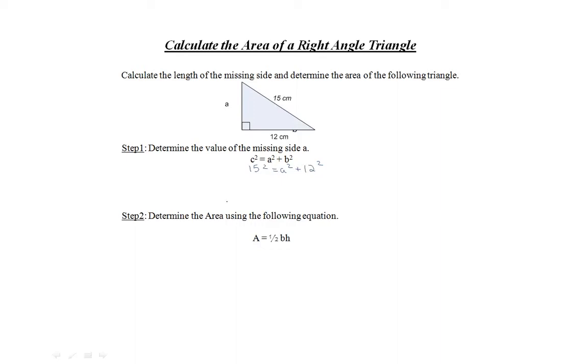Rearrange the equation to solve for A. Move the 12 squared to the opposite side of the equation and subtract it. 15 squared minus 12 squared equals A squared.